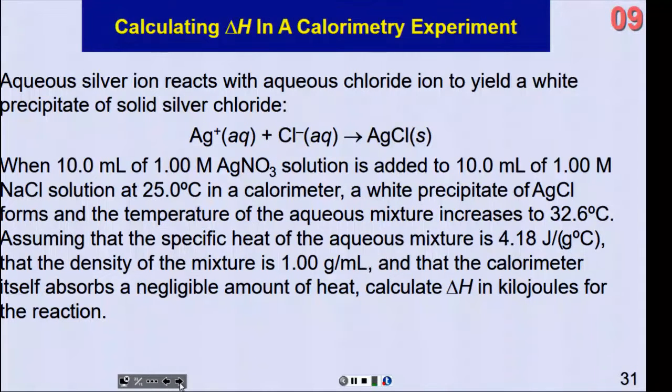Okay, let's do another calorimetry type experiment, but this time we're going to calculate delta H, and delta H is going to be in kilojoules, but specifically per mole for the reaction instead of just heat change. So enthalpy change is going to be per mole at the end here when we get done with this calculation, per mole. Now, there's a lot to read here, so let's work our way through it. There's going to be aqueous silver ion reacting with aqueous chloride ions to yield the white precipitate of solid silver chloride.